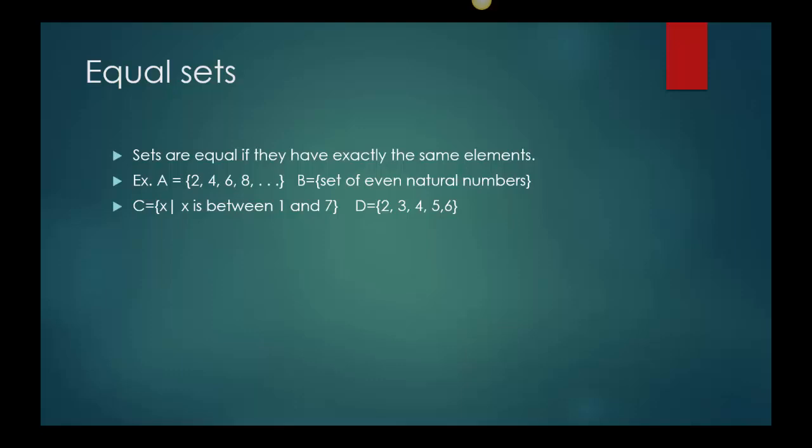So for example, if I had set A is {2,4,6,8,...} and B is the set of even natural numbers, and then C being the set {x | x is between 1 and 7}, and D being the set {2,3,4,5,6}, so A and B are equal. 2,4,6,8 are even natural numbers, so I know these are the same, I just wrote them differently. This is a listing method, this is a word description. C is a set builder description, but the way it describes it, I really should have said like x is a natural number between 1 and 7. That would make sense, it's {2,3,4,5,6}.